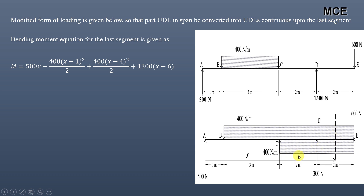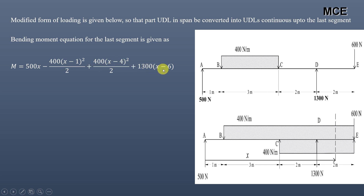Continuing the bending moment equation: + 1300(x−6). The reaction Rd = 1300 N acts at support D, which is at distance 6 m from A (i.e., 3+1+2 = 6). The complete bending moment equation is M = 500x − 400(x−1)²/2 + 400(x−4)²/2 + 1300(x−6). The important condition is: if any bracketed term becomes negative, it must be taken as zero.